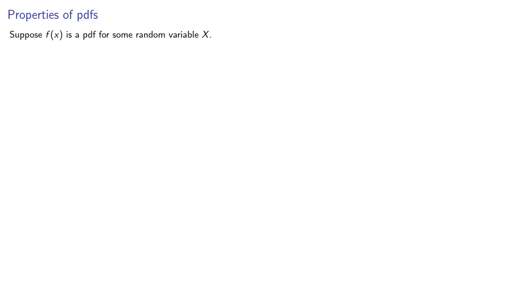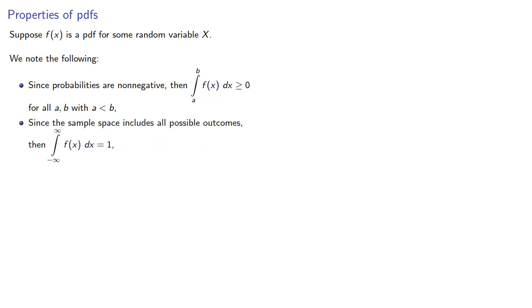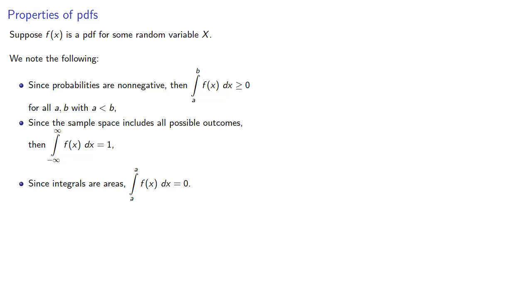Suppose f of x is a PDF for some random variable x. First, since probabilities are non-negative, the integral of our PDF over any interval must be greater than or equal to 0 for all a and b with a less than b. Also, since the sample space includes all possible outcomes, the integral over all real numbers from minus infinity to positive infinity must equal 1. Finally, since integrals are areas, the integral from a to a is 0.